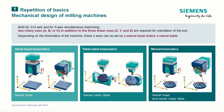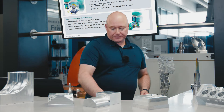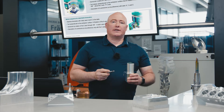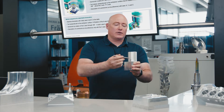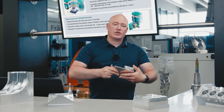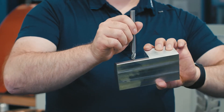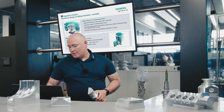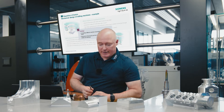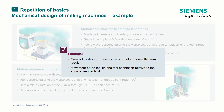Today in our practical example we are using table-table kinematics. Here is a short example to illustrate kinematics of the machine. In head-head kinematics, the tool moves around the workpiece while the workpiece is immobile. In table-table kinematics, the tool is immobile and the workpiece moves in the axes. Completely different machine movements produce the same result: the movement of the tool tip and the tool orientation are always identical relative to the workpiece surface.